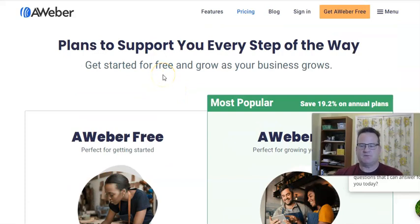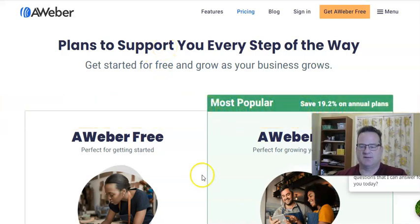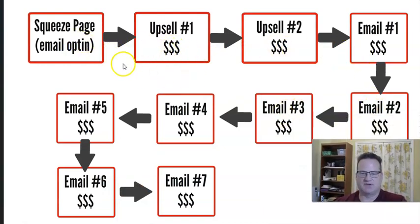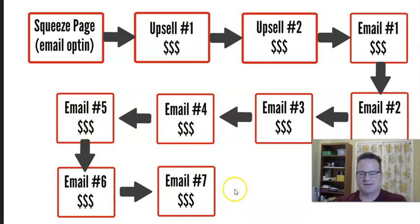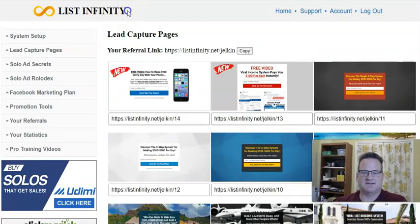Once you have your free email autoresponder account set up, you're going to need a system for creating an email opt-in page. This is kind of a picture of a real simple email sales funnel. You're going to need an email opt-in page to collect the emails, and then you can send follow-up messages in the email autoresponder — AWeber or GetResponse. And so we're going to use something called List Infinity.